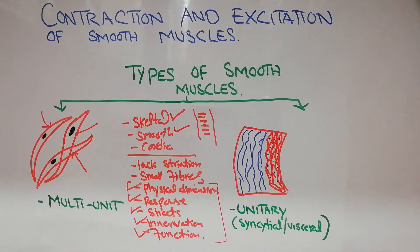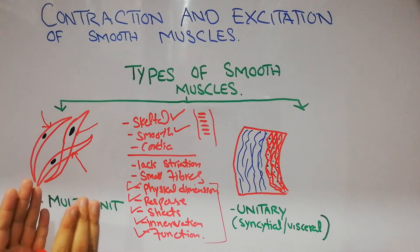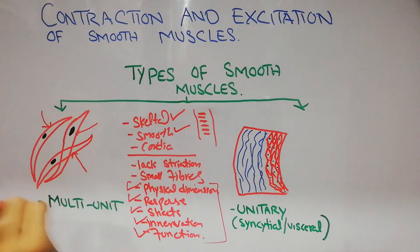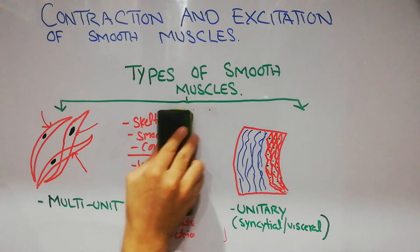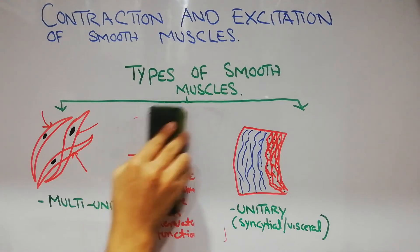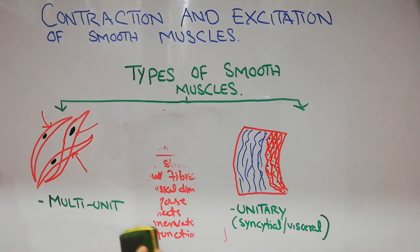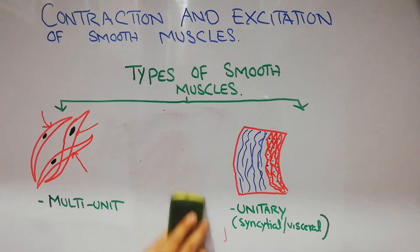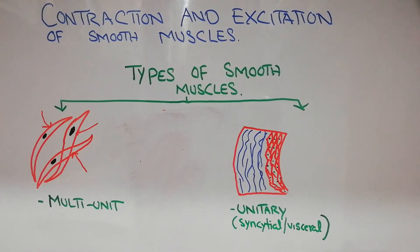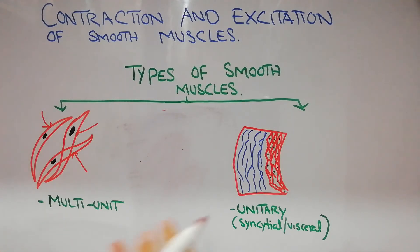Broadly speaking, smooth muscles are divided into two main types. One is the multi-unit smooth muscles and the other is the unitary smooth muscles. These are the two broad categories used to classify smooth muscles.